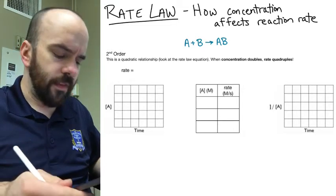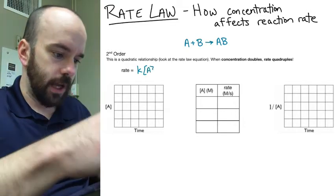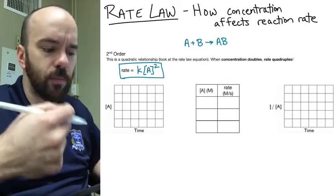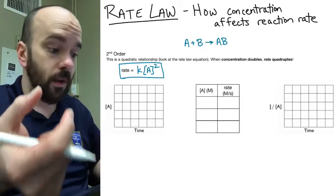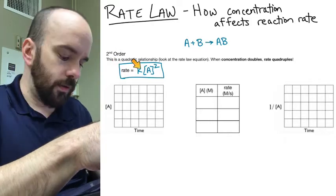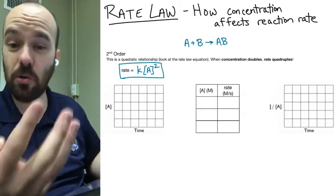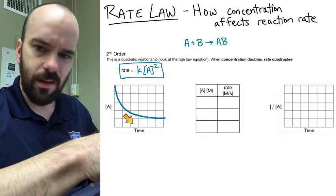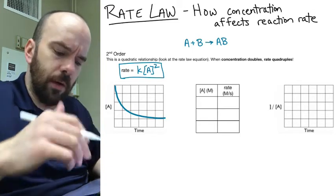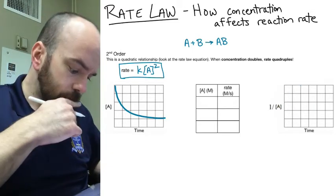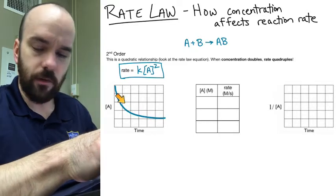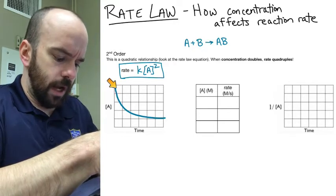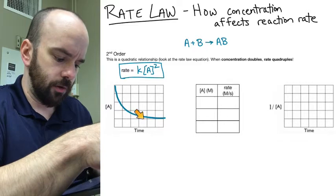Next, let's look at second order reactions — a quadratic relationship. The rate law is: rate equals K times concentration squared. If you double the concentration, the rate actually quadruples, because of that squared term — a huge effect on rate based on concentration. The graph of concentration versus time looks similar to first order, which is why we can't tell from that graph alone whether it's first or second order. We need the other linearized graph to distinguish between the two.